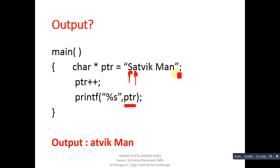If we remove this statement PTR plus plus from here and we directly print PTR by declaring this pointer declaration statement, then satvik man will be printed on console.